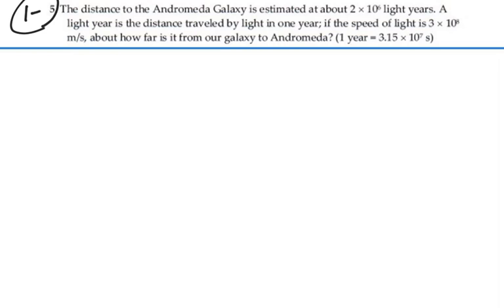One relationship we'll learn in physics is that distance is equal to speed times time. In other words, speed equals distance per time.